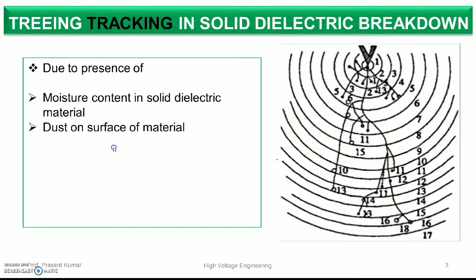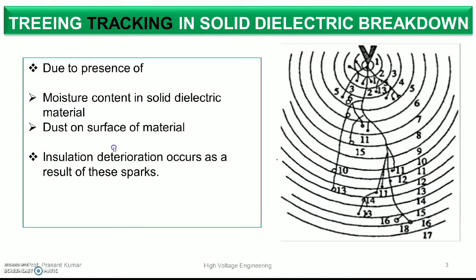The second reason is due to surface dust on the surface material — the dielectric strength is weakened as compared to the pure dielectric strength of the solid dielectric material. Due to dust, the breakdown that occurs generally forms in the shape of a tree. The third reason is insulation deterioration which occurs as a result of sparking.